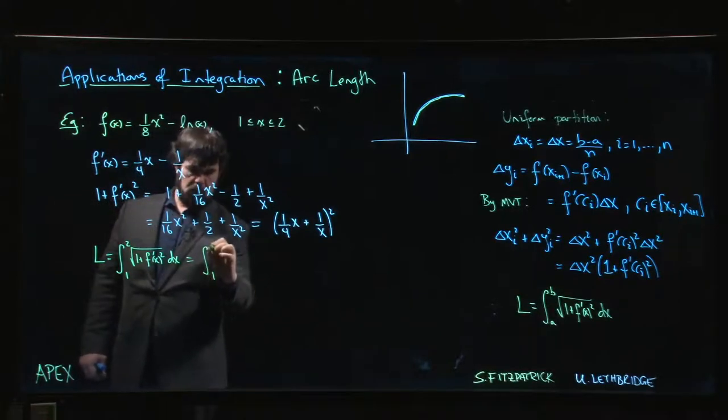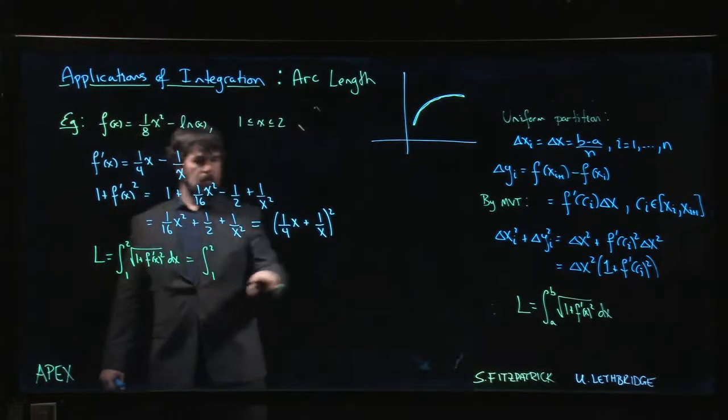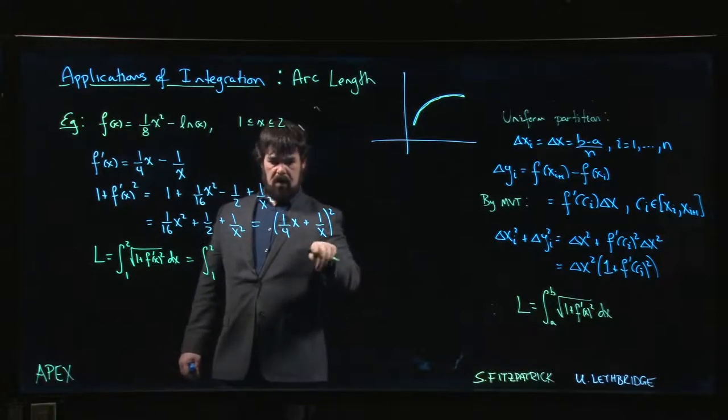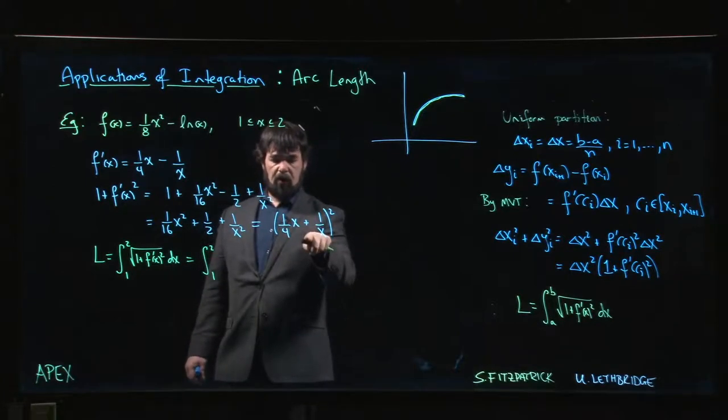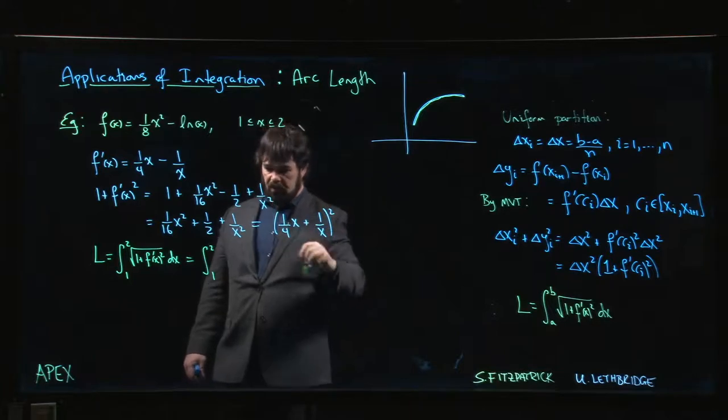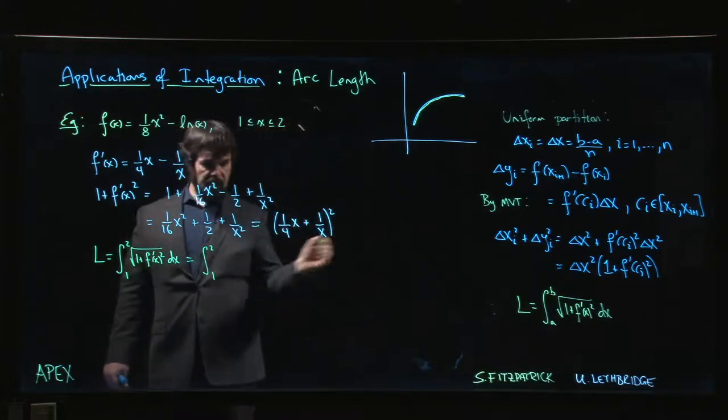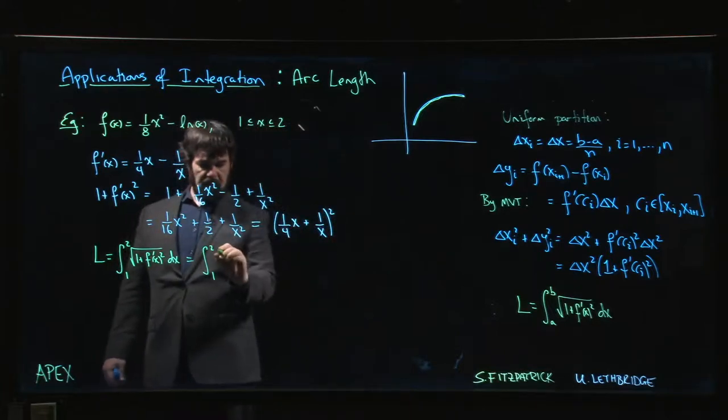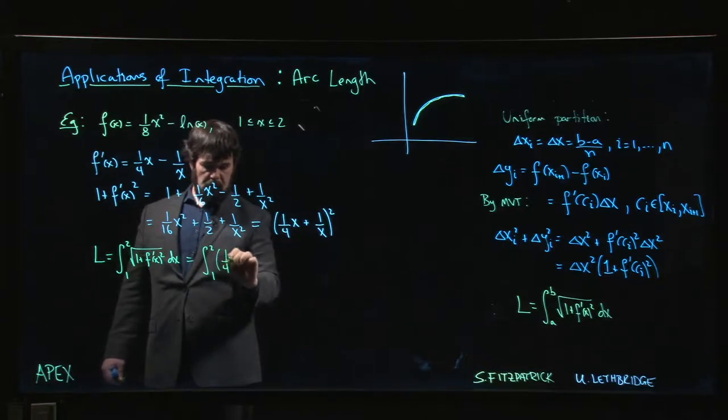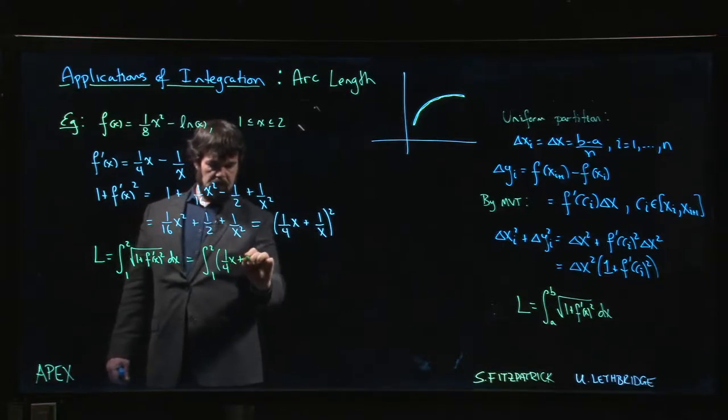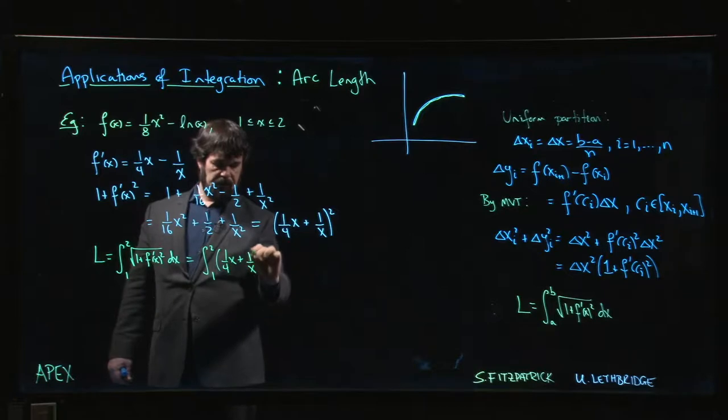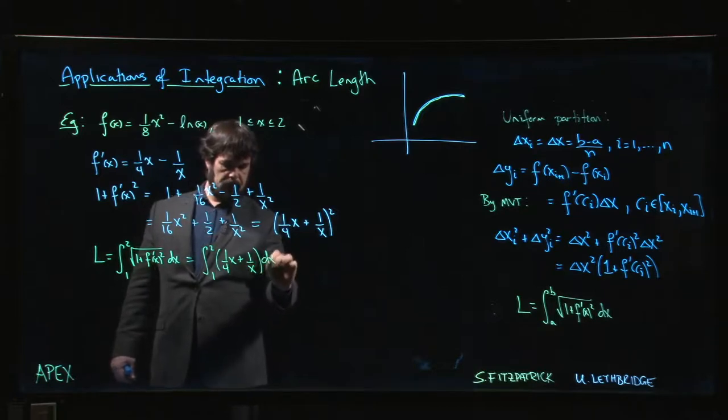1 to 2, square root of this square. And the thing inside the square is positive because x is going from 1 to 2, so we don't have to worry about absolute values or anything like that. The square and the square root cancel out—we just get 1/(4x) + 1/x, integrate with respect to x.